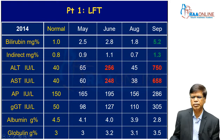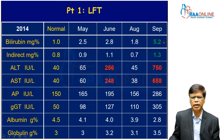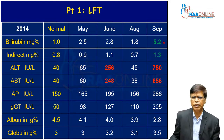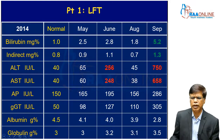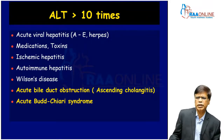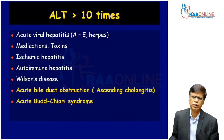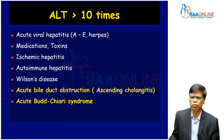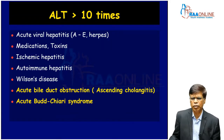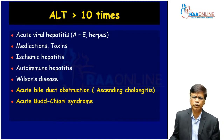Fluctuant liver enzymes, fluctuant jaundice, fever, rigors, and right upper quadrant pains in a 55-year-old lady who had a cholecystectomy in 1998. When approaching this kind of clinical problem, you need to have a list of differential diagnoses and go through them diligently, because she has been presenting for six months with no diagnosis.